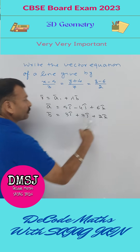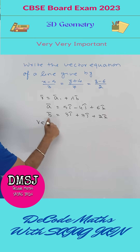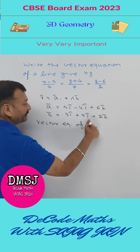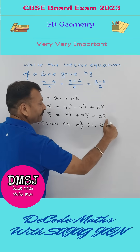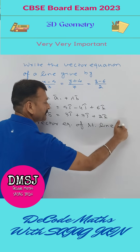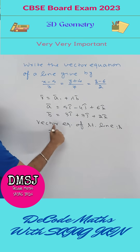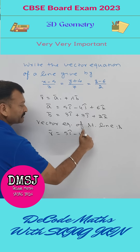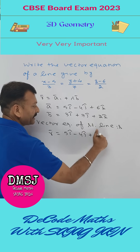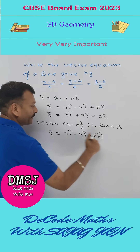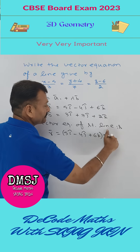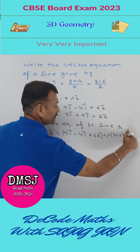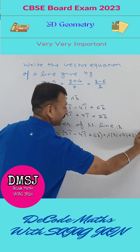So the vector equation of the straight line is r equal to (5i minus 4j plus 6k) plus lambda times (3i plus 7j plus 2k).